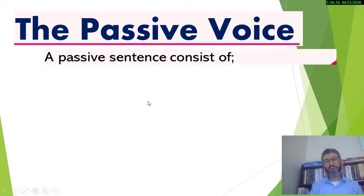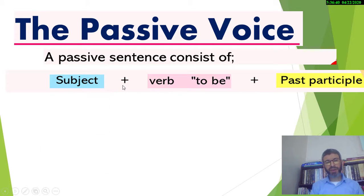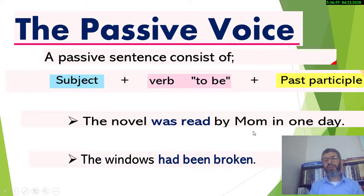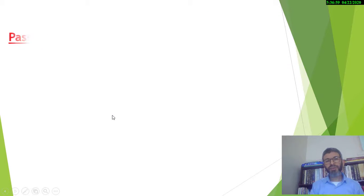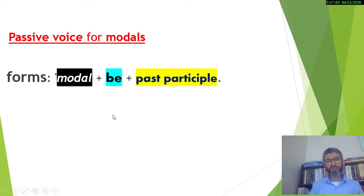The rule for the passive voice usually consists of the object, which now becomes the subject, plus the auxiliary 'to be' plus the past participle. For example: 'The novel was read by mom in one day.' Another example: 'The windows had been broken.' Now let's move to modals and the forms for modals.